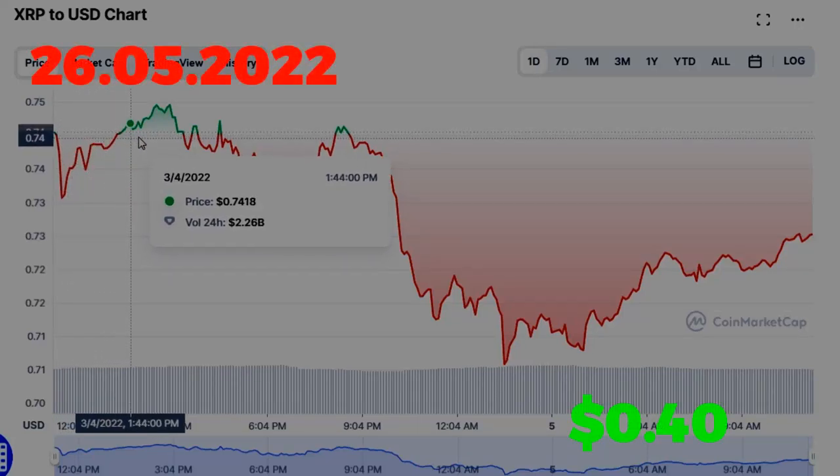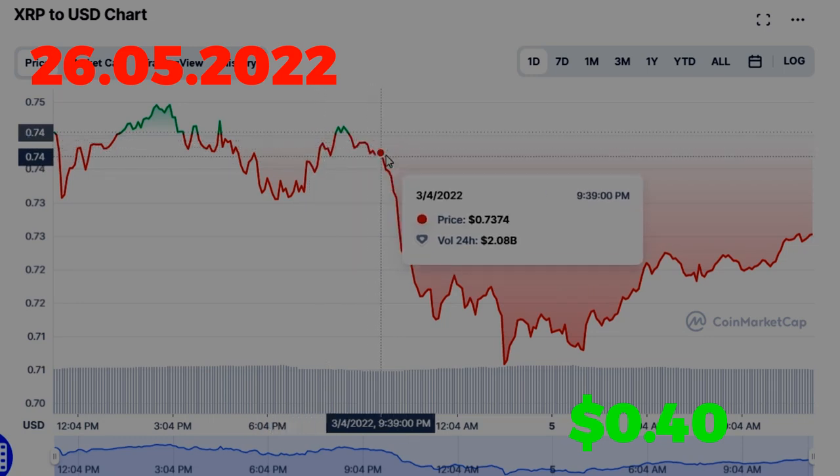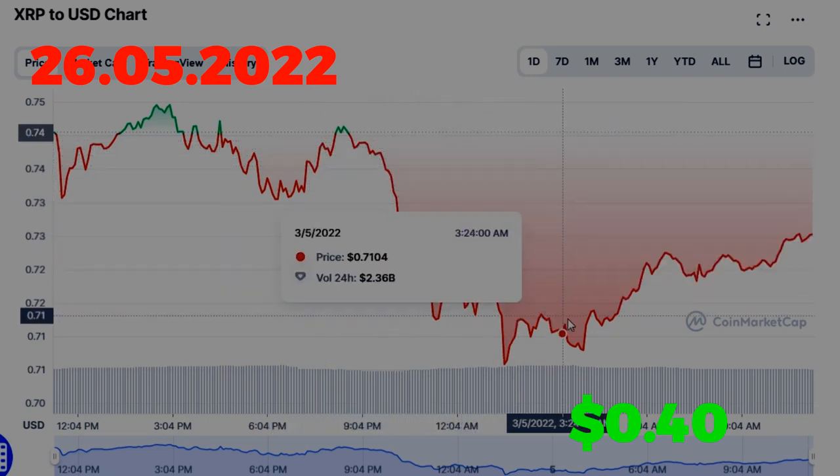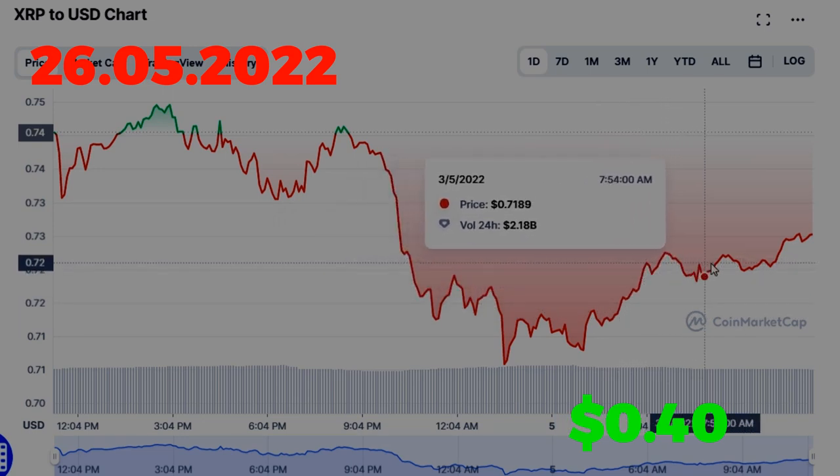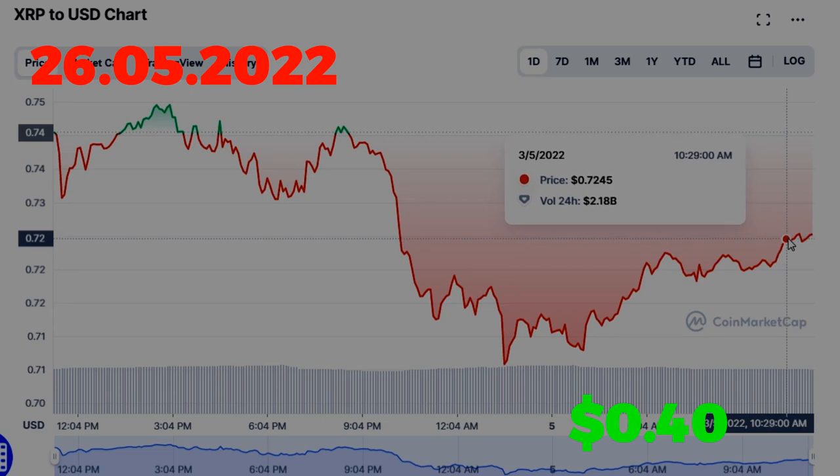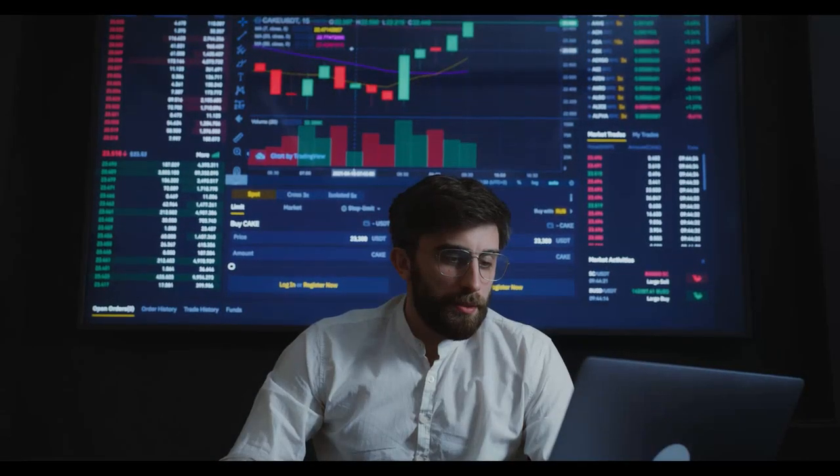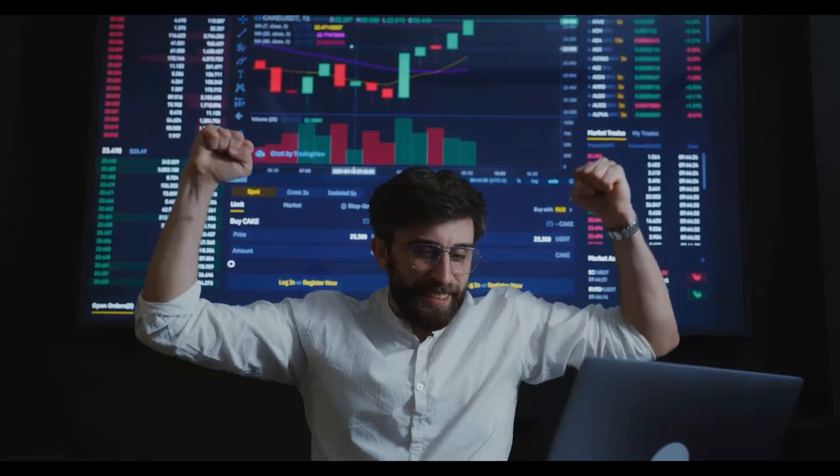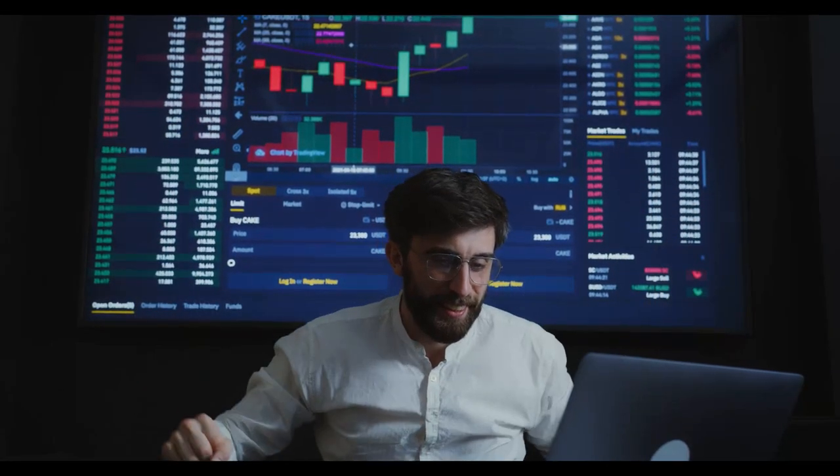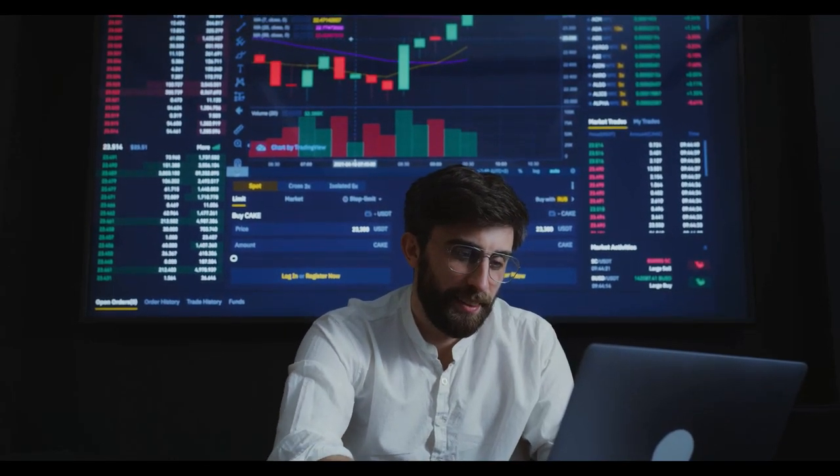The current price of XRP for today you can see yourself on the screens. The trading volume for 24 hours is $1,294,436,065. XRP has dropped 4.08% in the last 24 hours. That's it for today. Thank you for watching this video to the end.